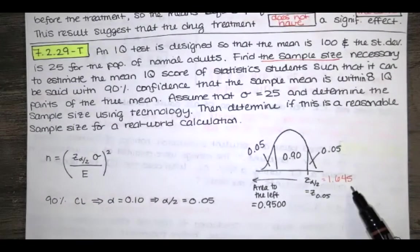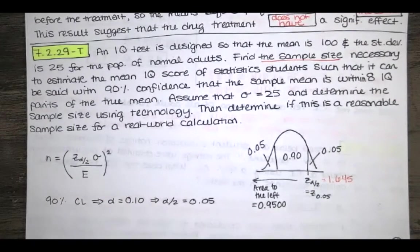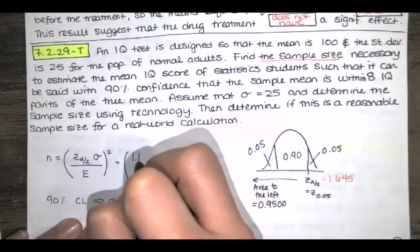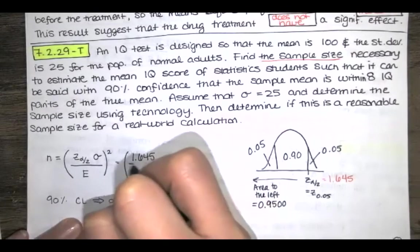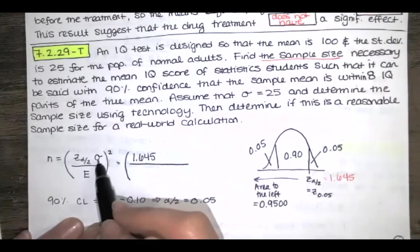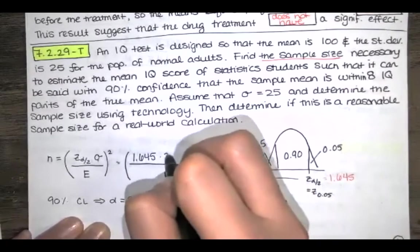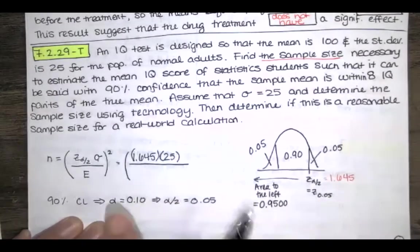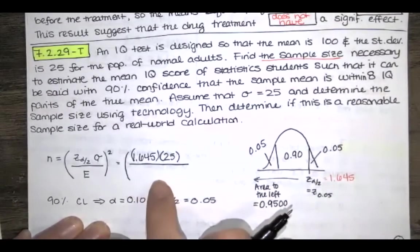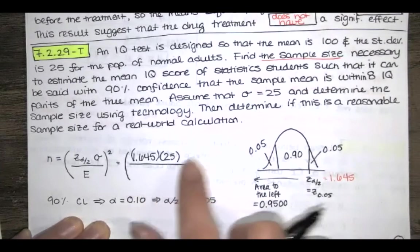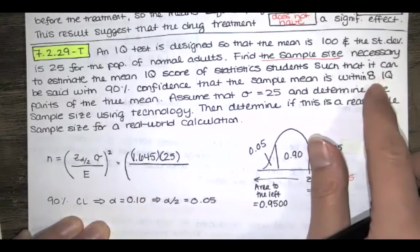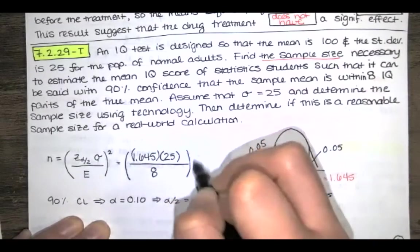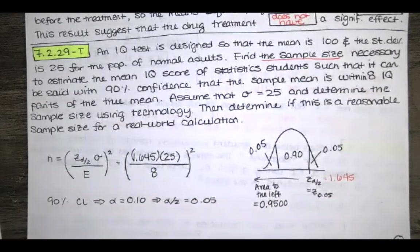So we have that Z score now. That's the critical value. Then we want to multiply by the standard deviation and we are told to assume that the population standard deviation is 25. And then we want our desired error down here. The error is supposed to be eight IQ points, so no more than eight points. We're going to take those and square it, and that's going to give us our N value.